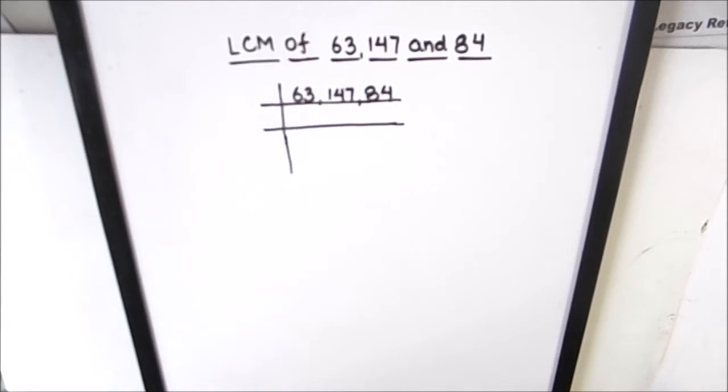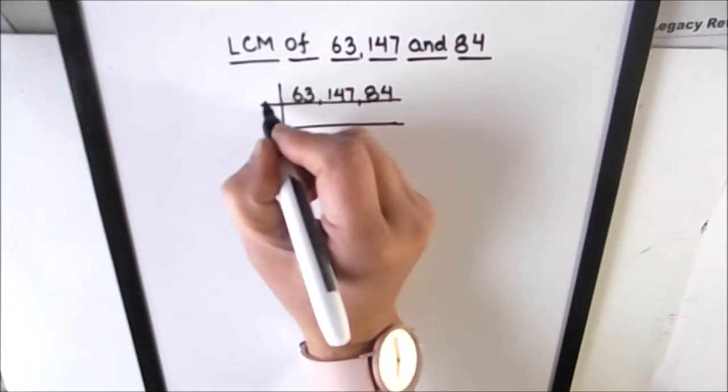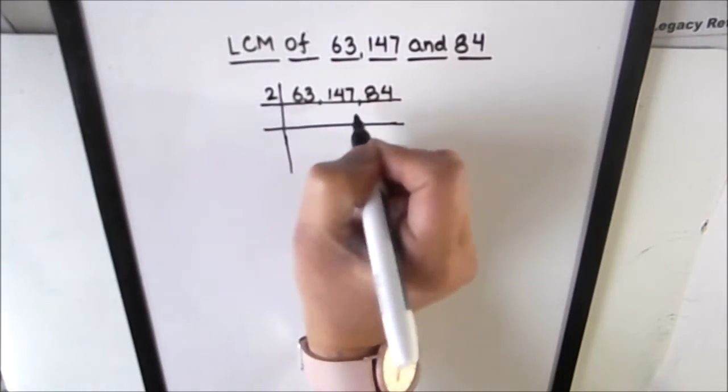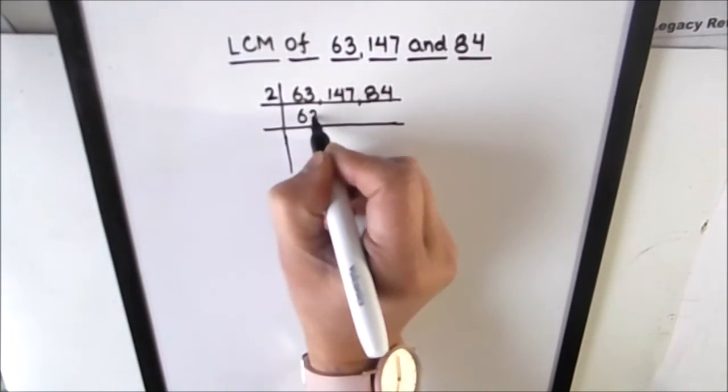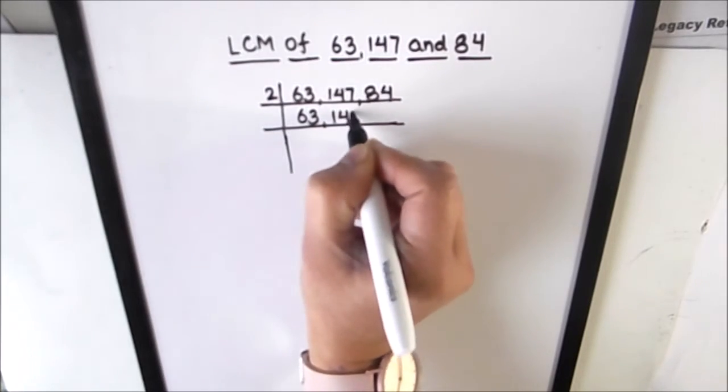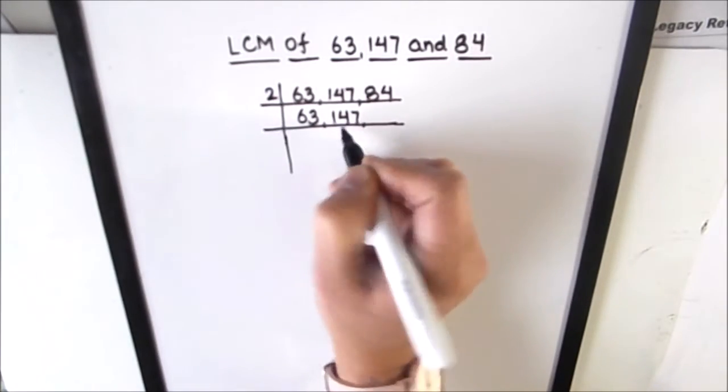So let's divide the three numbers. As 84 is an even number, so we'll start with the first prime number 2 to divide 84. 63 and 147 are odd numbers, these are not divisible by 2, so we'll write it as is.